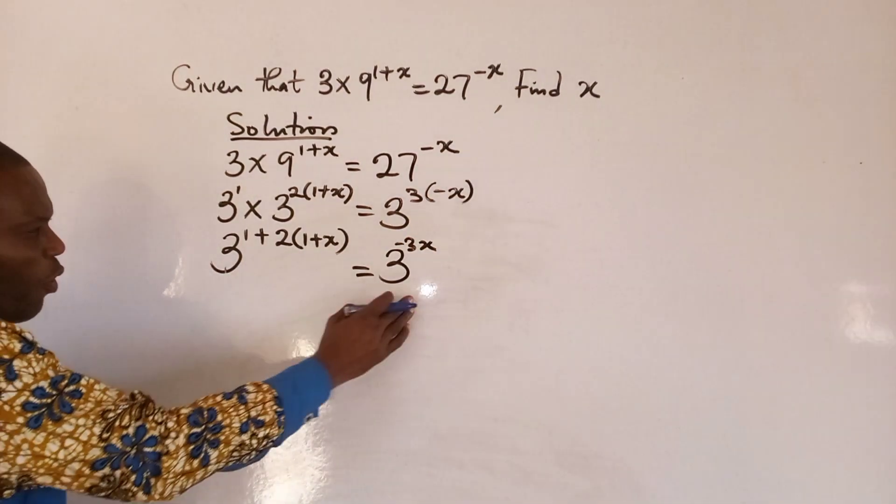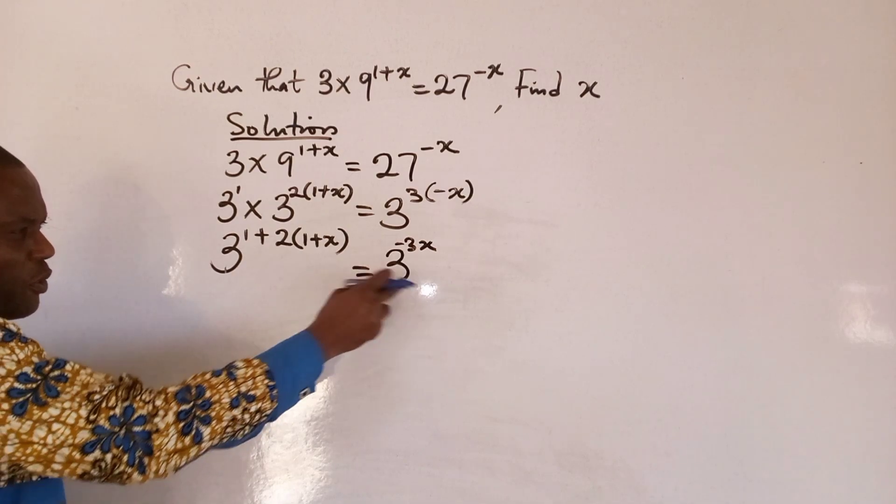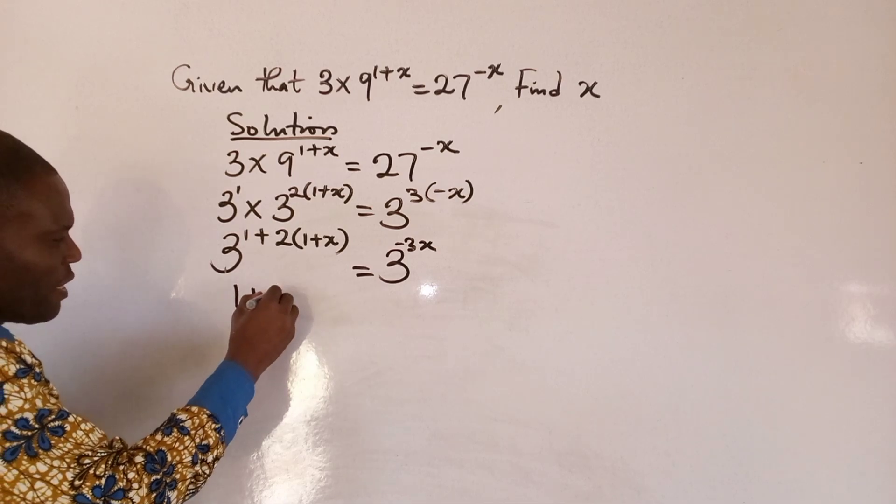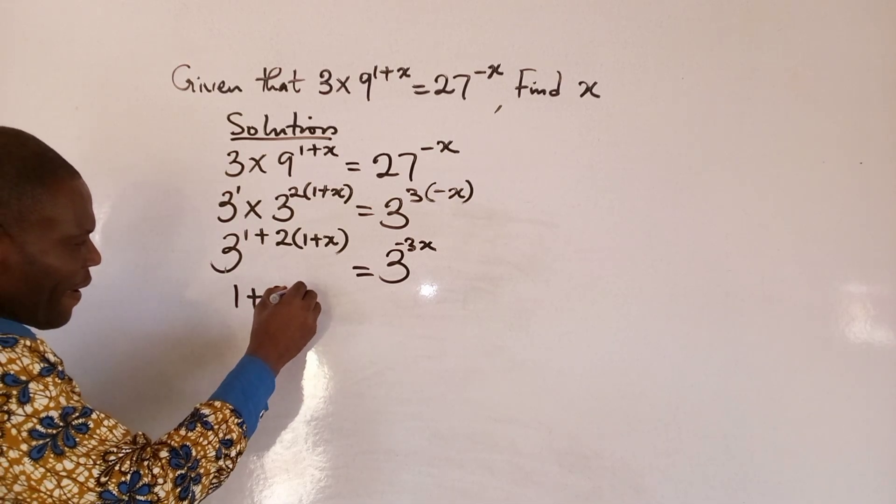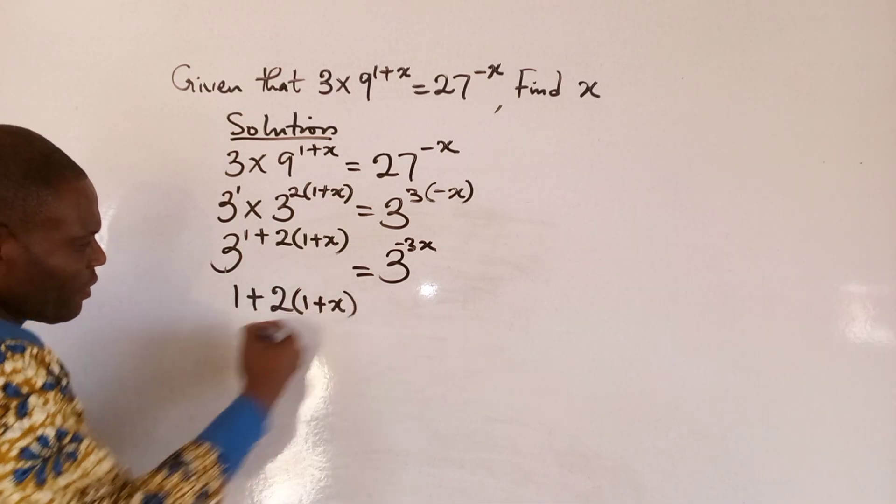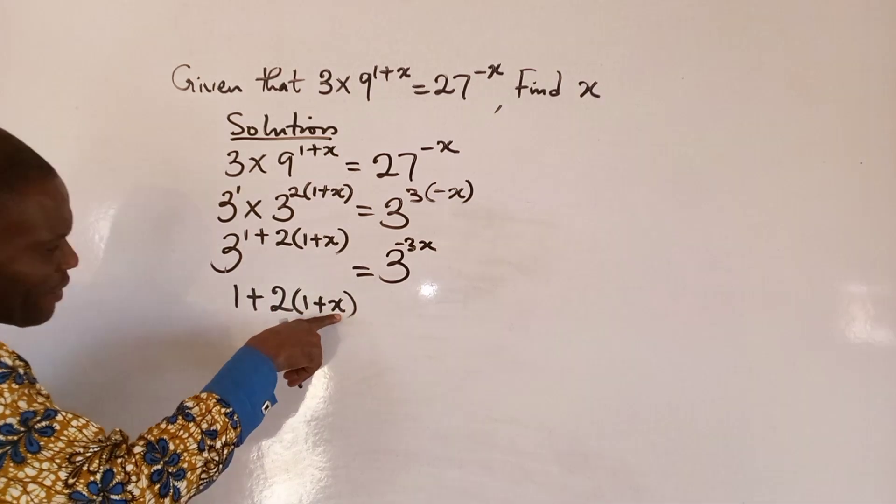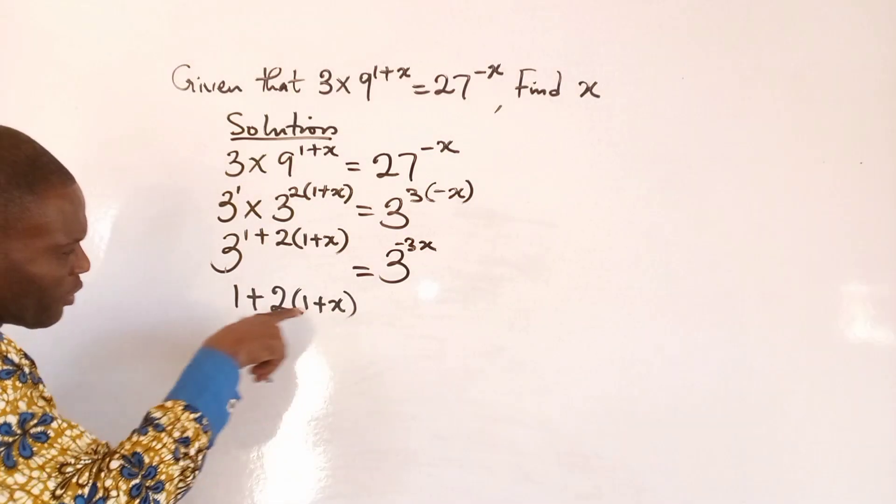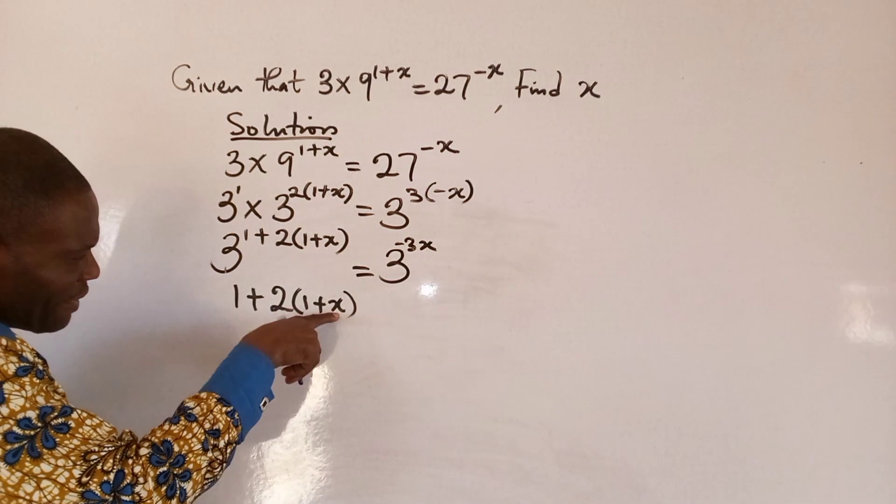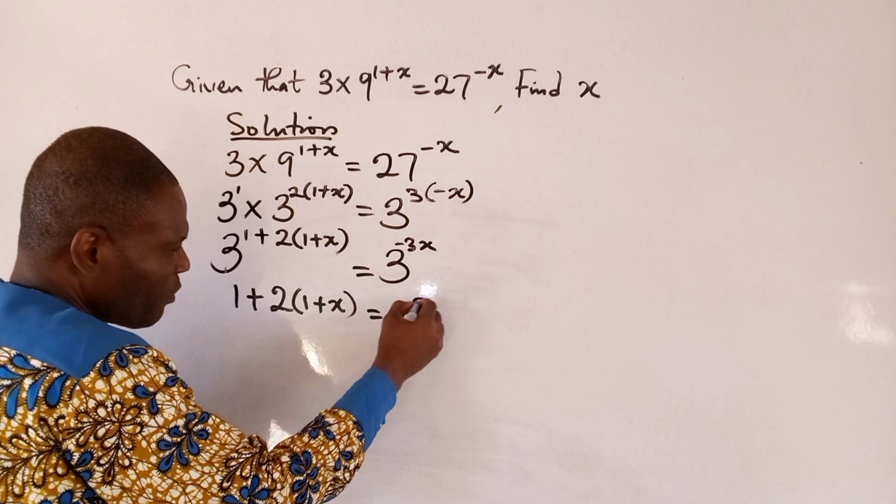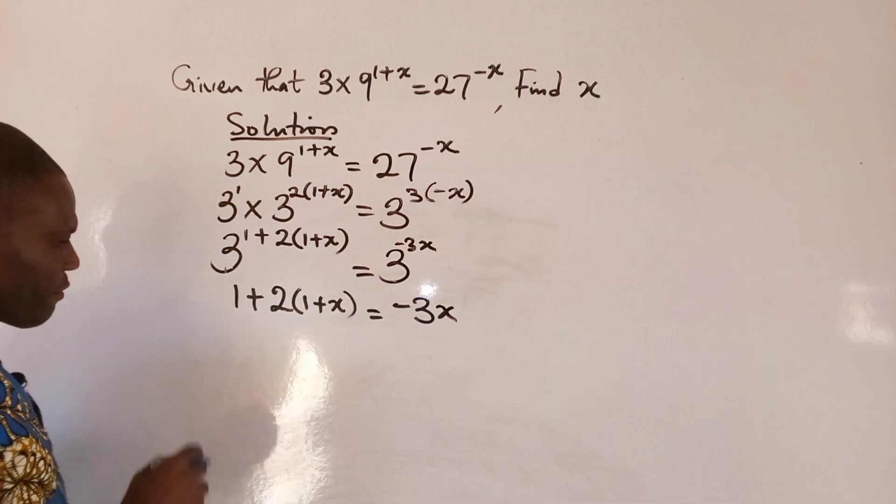Here, because of this division, the equals to sign, we can take care of this. We cancel off this. So, we have 1 plus 2, 1 plus x, 2 times 1 plus 2x. We are going to multiply this times this, and this will give us this, we have minus 3x. Because this has been taken care of.